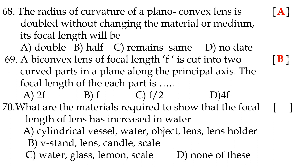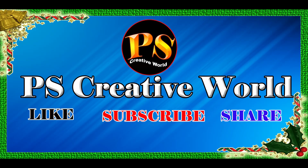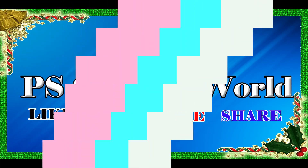Seventieth question: what materials are required to show that the focal length of a lens increases in water? Option A: we require a cylindrical vessel, water, an object, a lens, and a lens holder. Thank you, please like, share this video and subscribe to our channel.